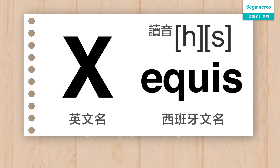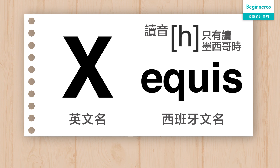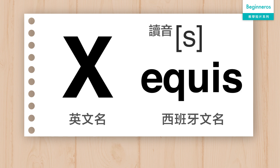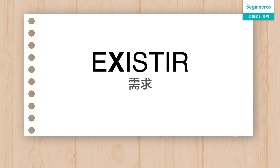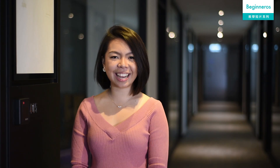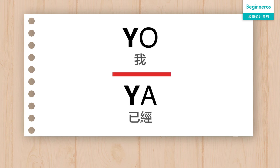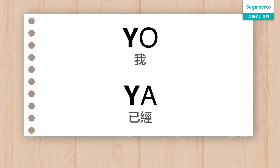X 在西班牙文中會有兩個發音。第一個發音就是當我們說墨西哥 México 的時候，我們會發一個 H 的聲音。但 X 這個字在其他字裡都會用來發一個 S 的音，例如 Existir，只是發一個 S 的音。接下來的 Y，它是一個非常簡單的字，因為它跟英文裡面的發音 Y 是一樣的，例如 Yo，都是發音英文的 Y。